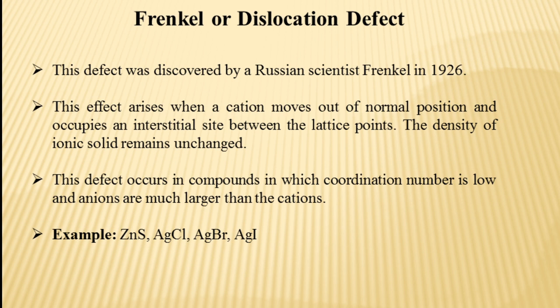The ion is still present within the crystal, meaning the number of ions in the ionic crystal does not change. So the density of the ionic solid will also not change. This defect occurs in compounds in which the coordination number is low and anions are much bigger than the cations. For example, zinc sulfide and silver halides like silver chloride, silver bromide, and silver iodide. Silver ions are smaller in size and they can occupy the interstitial sites.